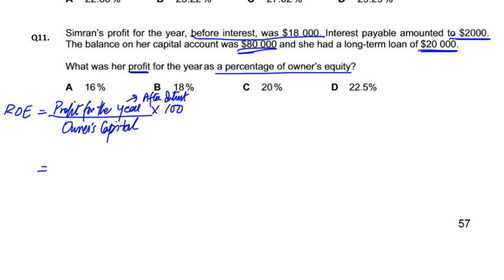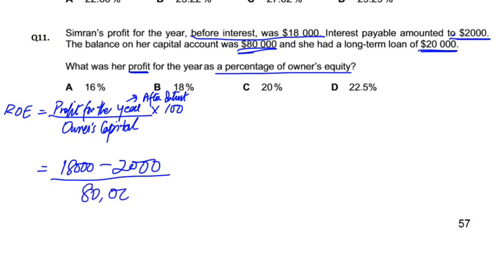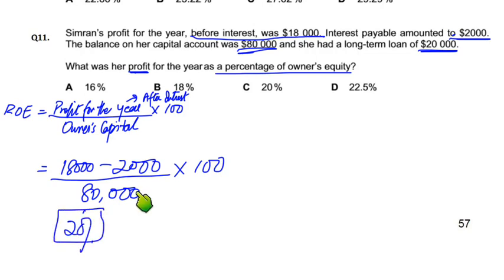Profit before interest is 18,000, and the loan interest is 2,000, so we minus that — 16,000 is the pure profit for the owner's purpose. Simran's capital is 80,000, so we do 16 upon 80, which gives 20%. This means on Simran's 80,000 investment, the return is 16,000, which is 20%.